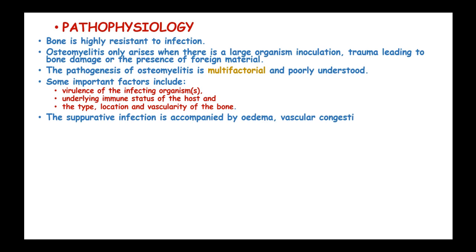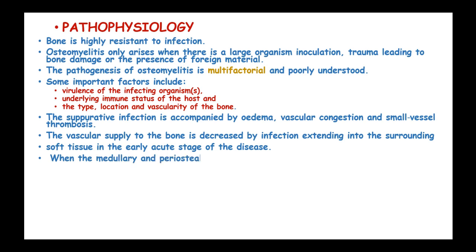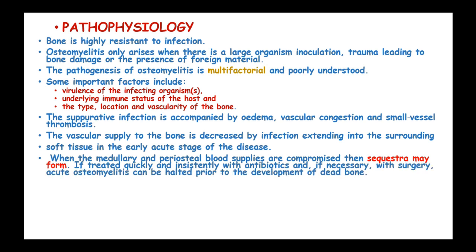The initial infection is accompanied by edema, vascular congestion, and small vessel thrombosis. The vascular supply to the bone is decreased as infection extends to surrounding tissues in the early acute stage. When the medullary and periosteal blood supplies are compromised, sequestra may form. If treated quickly and consistently with antibiotics, and if necessary with surgery, acute osteomyelitis can be resolved prior to development of dead bone.